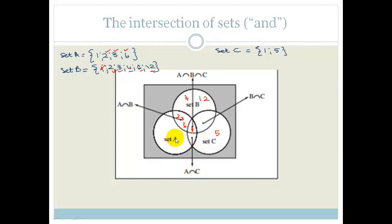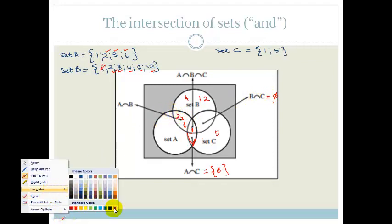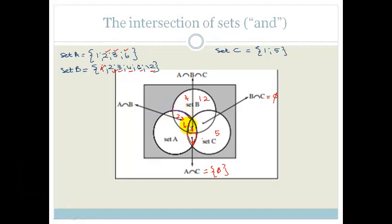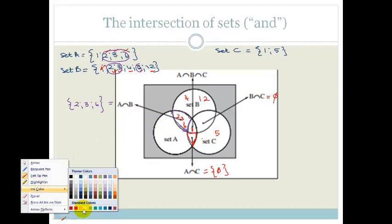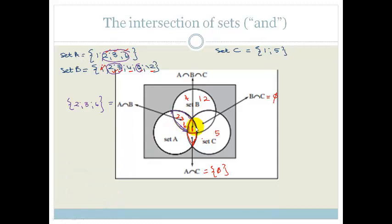So A intersection C is just going to be the empty set. There is nothing that is intersecting in just set A and C. Similarly, the intersection of B and C is an empty set. But the intersection of A and B is just this bit here. In other words, what is in both set A and set B, which is 2, 3, and 6. So that set there would be 2, 3, and 6. And finally, the intersection of all three, the only number that is in all three, is this number here in the middle, which is 1. So the intersection of all three is 1. So intersection means and.